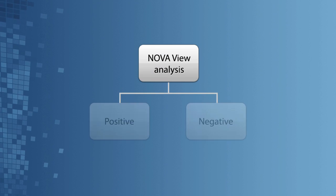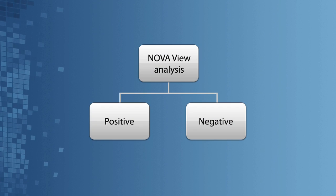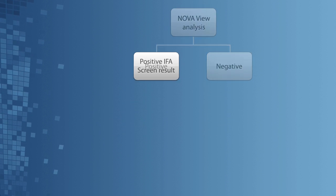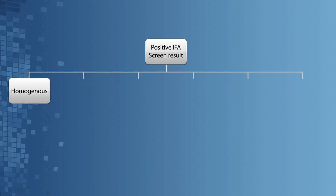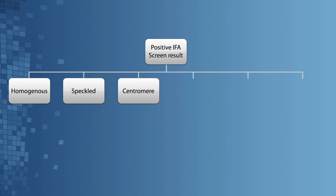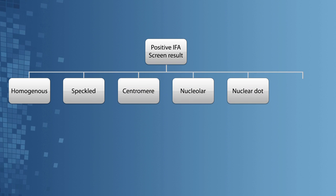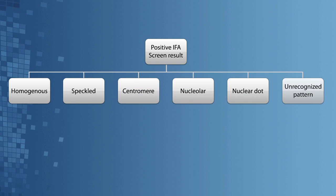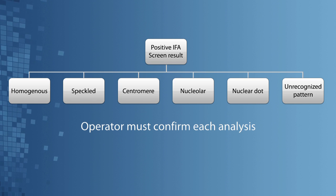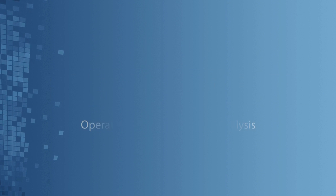A light intensity threshold supports user interpretation of positive and negative samples. Positive samples are identified as homogeneous, speckled, centromere, nucleolar, nuclear dot, or as a positive unrecognized pattern. All results are confirmed by the technologist, who may modify or add comments to the results.